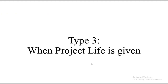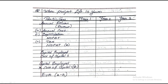The third type of sum is when project life is given. This requires a tabular format. The table has: Particulars and columns for each year. The rows are: Annual Revenue minus Annual Cost minus Depreciation = Net Operating Profit Before Tax, less Tax = Net Operating Profit After Tax (value A). Then Capital Employed × Cost of Capital = value B. EVA = A − B.